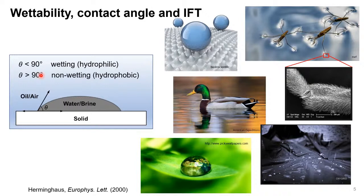Sometimes you can have hydrophilic surfaces that, because of nanoscale roughness, behave as hydrophobic surfaces — making droplets. You can see this in some plants where rainwater forms droplets that run off and clean the dust off the leaf. I'll show an example of how wettability impacts flow in rocks.